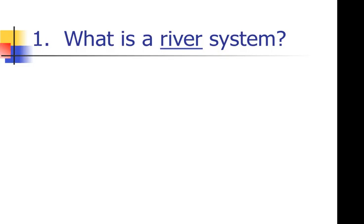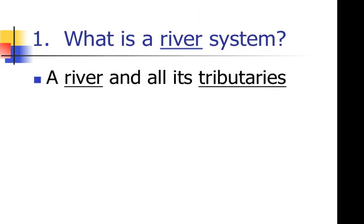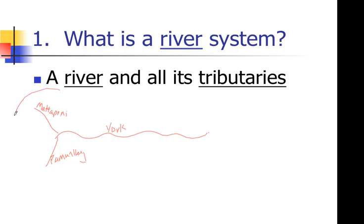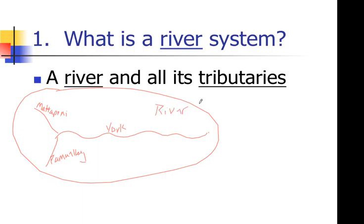A river system is a river and all of its tributaries. A tributary is a smaller river that feeds into a larger river. For example, the Mattaponi and the Pamunkey are two rivers that feed into the York River — so they are the York River's tributaries. All of this together, everything that feeds into the main river, is called a river system.